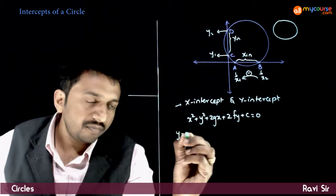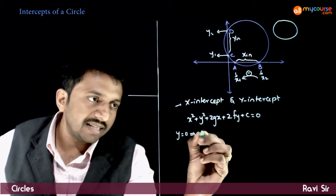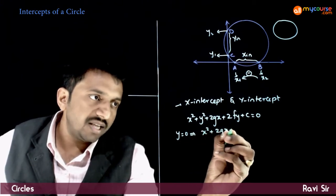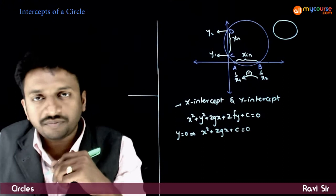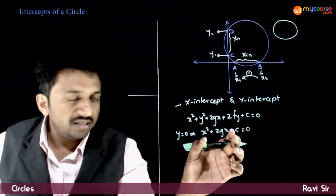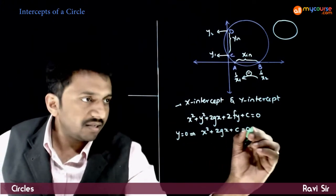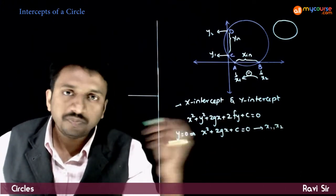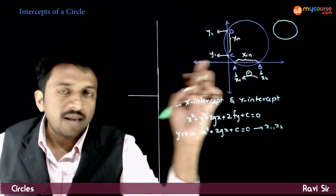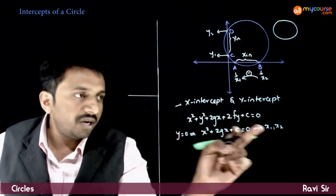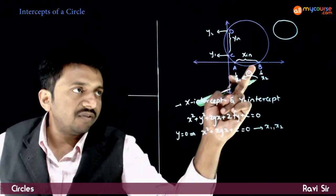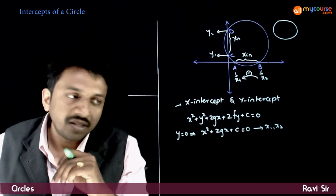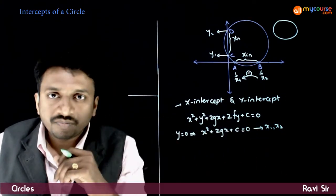Substituting y = 0 gives: x² + 2gx + c = 0. This is a quadratic with two roots x1 and x2 — one is the x-coordinate of the first point and the other is the x-coordinate of the second point.